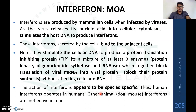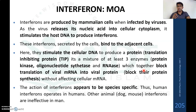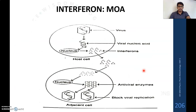By blocking viral multiplication we can prevent viral infection. However, the action of interferon is species-specific — human interferon operates only in humans, and other animals' interferons are ineffective in humans. This is why the production of interferons by recombinant DNA technology is important.